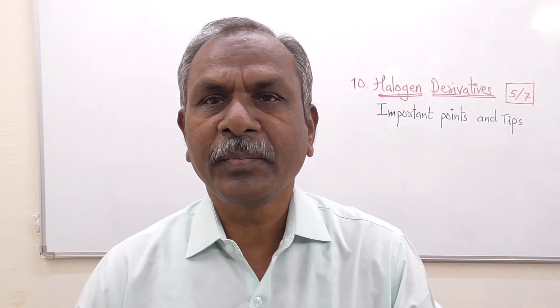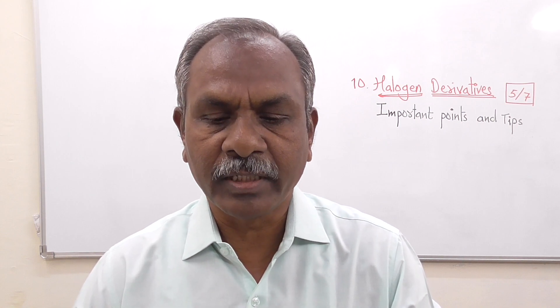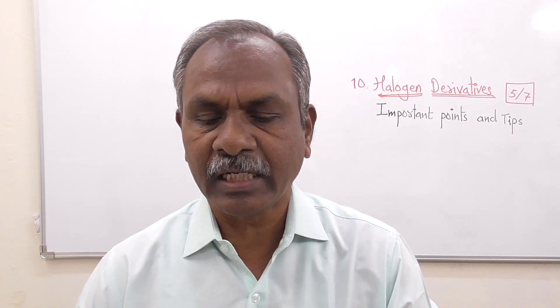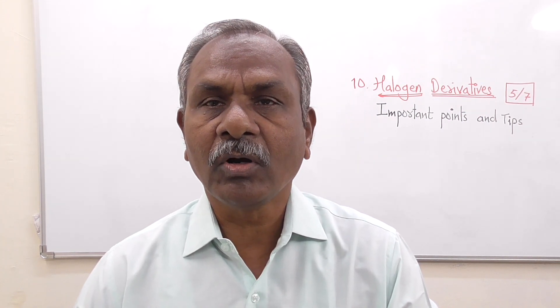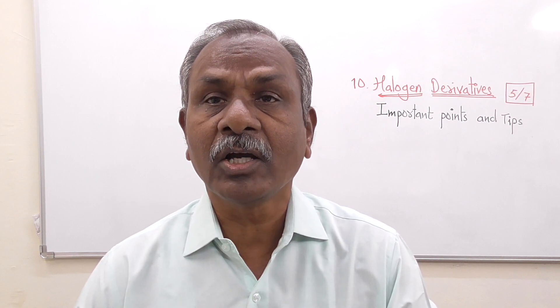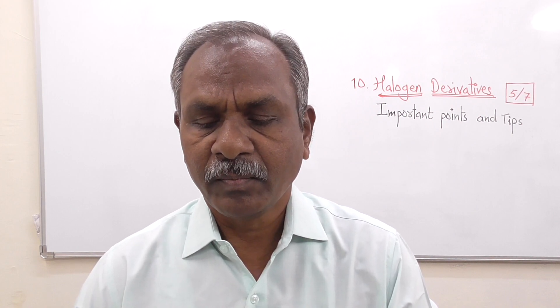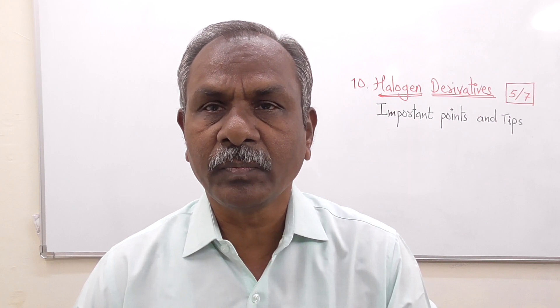Welcome to EOS Academy YouTube channel. In this video we are going to discuss the 10th chapter of Chemistry of 12th Standard, i.e. Halogen Derivatives. The weightage of this topic for state board examination is 5/7 — 5 compulsory marks and 7 with option. The distribution of marks may be 1 plus 2 plus 2 plus 2.